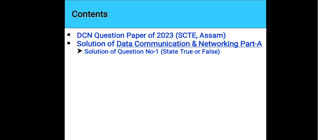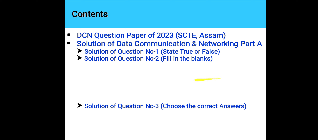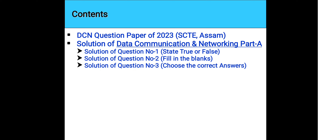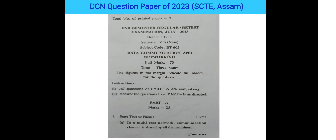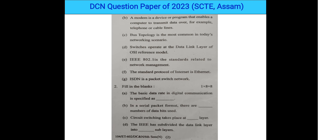There are three questions in Part A: Question number one is State True or False, question number two is Fill in the Blanks, and question number three is Choose the Correct Answer. This is the question paper that came in the July 2023 examination. Total marks is 70, with two parts — Part A has 25 marks.